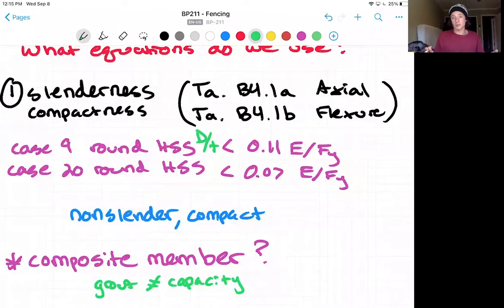You might be wondering as well if we should be checking this as a composite member, because there is a grout fill inside of that HSS, but that's actually going to reduce its capacity in the check we do, and the grout itself does not add any flexural capacity. Remember, if we're thinking about it like concrete, if we're not adding any steel rebar inside of that grout, it's not going to have any more capacity in tension...